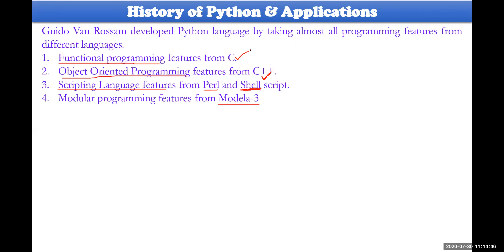Look at this: C does not have any object-oriented programming, scripting is not there in C, and modular programming is not there in C. C++ is an enhancement of C — it has functional programming and object-oriented programming, but scripting cannot be done and modulars cannot be done in C++. Perl and Shell don't support functional and object-oriented programming — they can write some kind of script that executes in a top-down fashion.